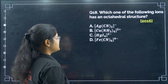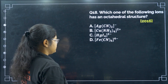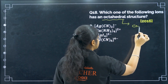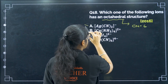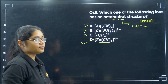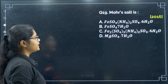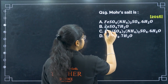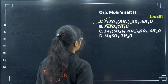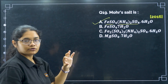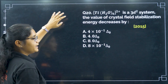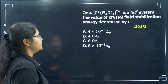Next, which of the following ions has an octahedral structure? For octahedral structure, the coordination number must be 6. Checking the options: coordination number 2, then 4, then 4, then 6. So option D has octahedral structure. Next, Mohr's salt formula is FeSO4·(NH4)2SO4·6H2O — that is option A. This is a double salt as given in the book.